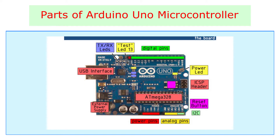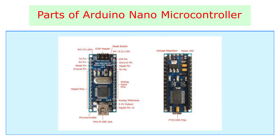It has 32 kilobytes of flash memory and can be programmed using the Arduino software IDE. The board can be powered using a Type-B mini USB cable or a 9-volt battery. It provides serial data communication available through the digital pins RX and TX. The onboard LED flashes when data is being transmitted.